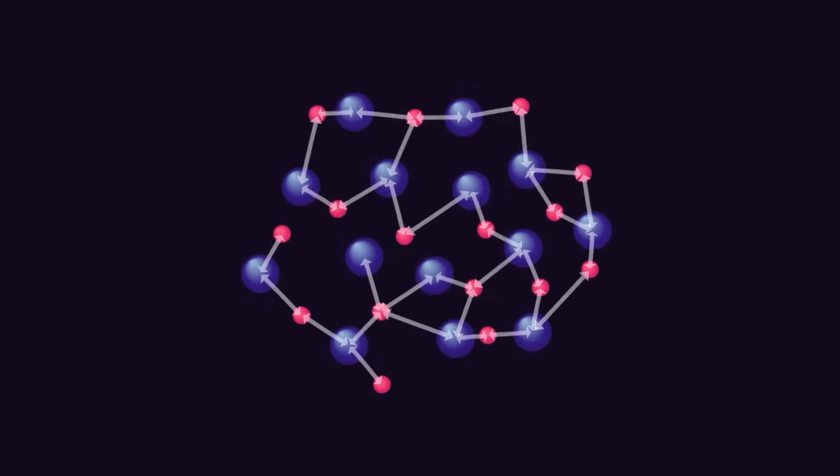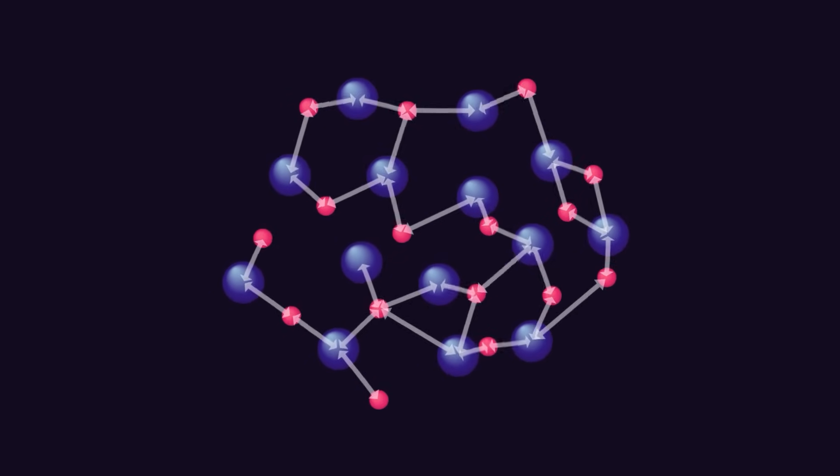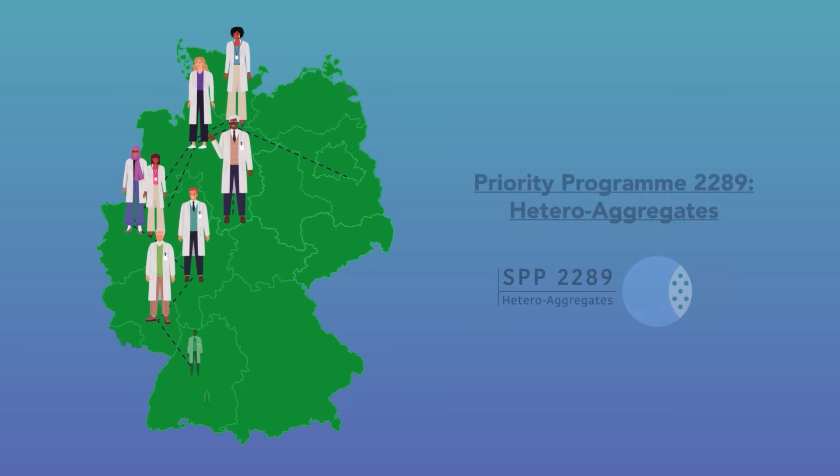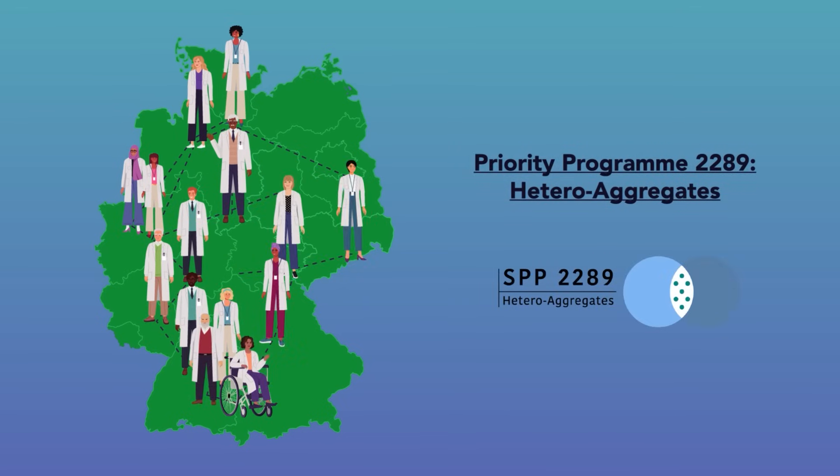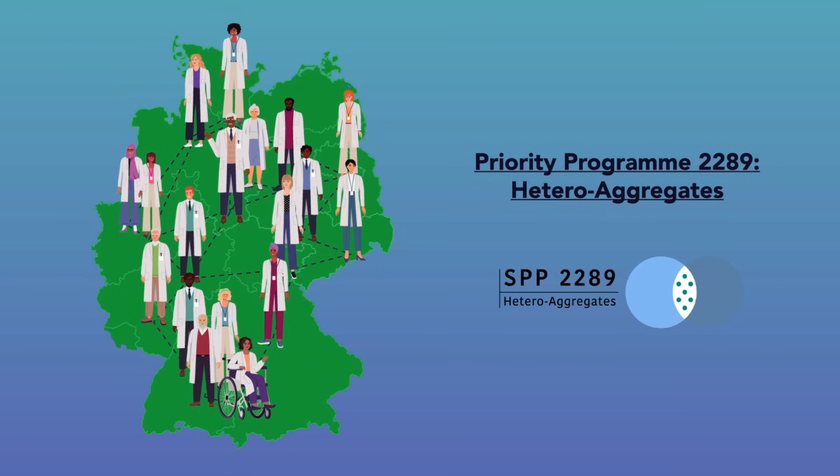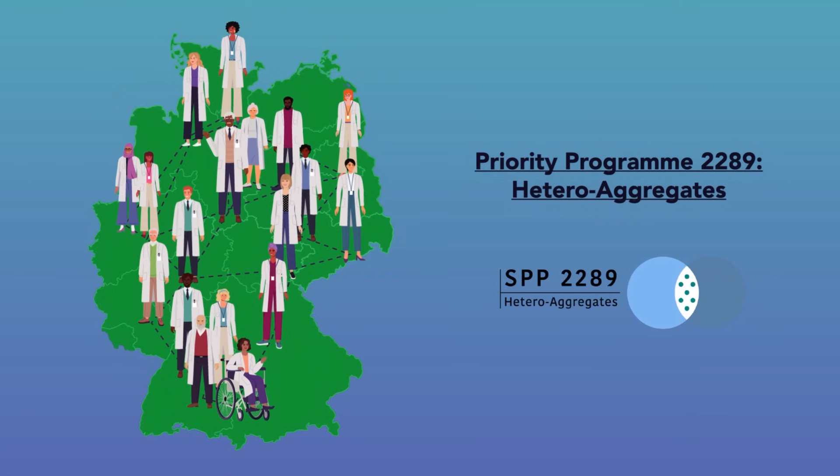This maximizes the number of beneficial contacts between different types of particles. This is the focus of the Priority Programme 2289, Heteroaggregates, an ambitious research effort currently taking place in Germany, spearheaded by researchers at the University of Bremen.